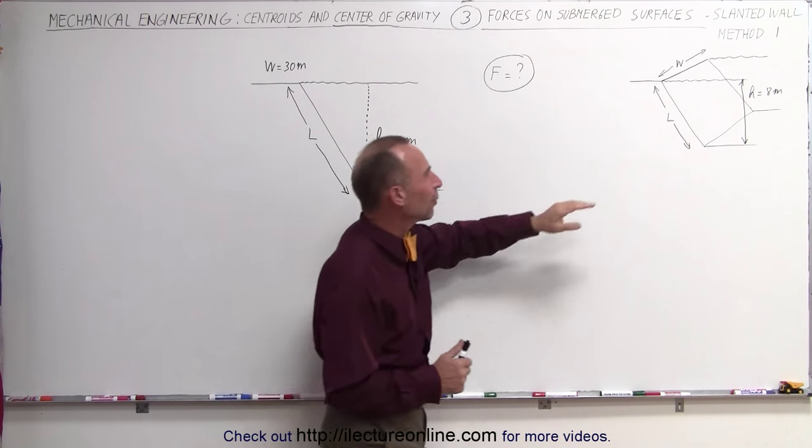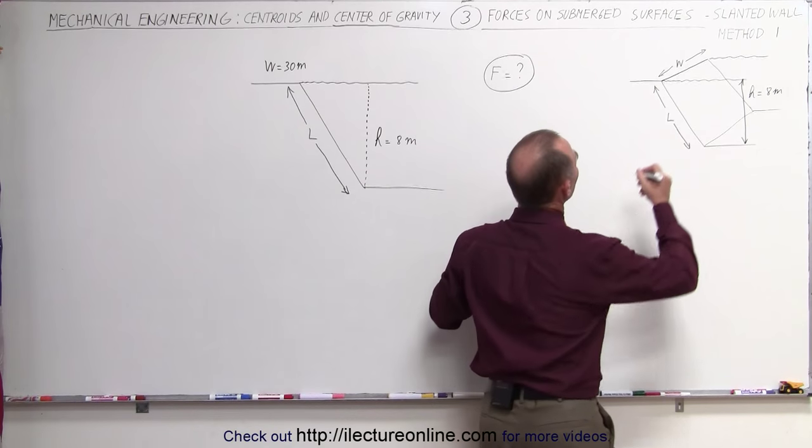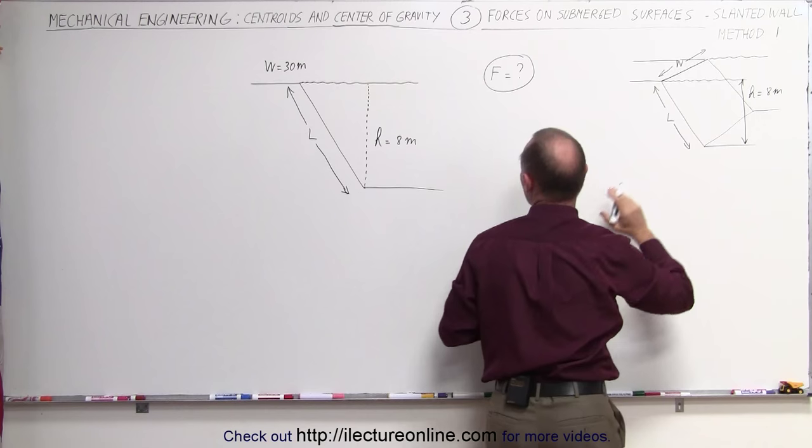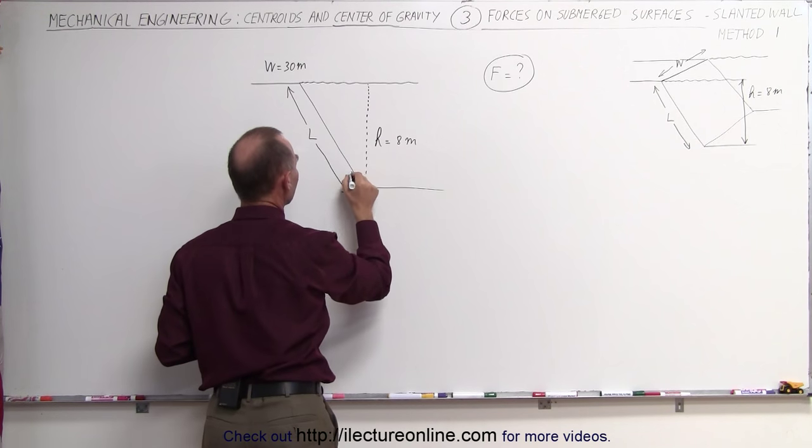You have a bit of a better idea when you look at this diagram right here. Maybe I should draw another line over here. You see here's the slanted dam. It makes an angle of 60 degrees.